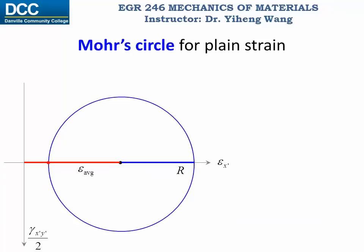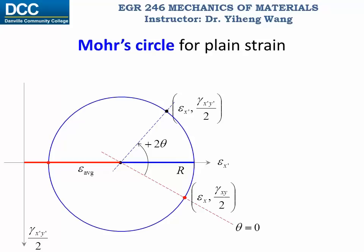When we use Mohr's circle for strain transformation, we first read the original normal strain and shear strain on Mohr's circle, and this line represents the original orientation when theta equals zero. For a new orientation theta, we rotate this line counterclockwise by 2 theta, draw a new line, and this intercept indicates the new normal strain along the x prime direction and the new shear strain.